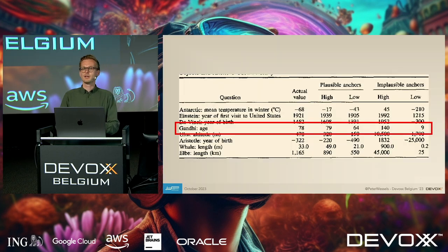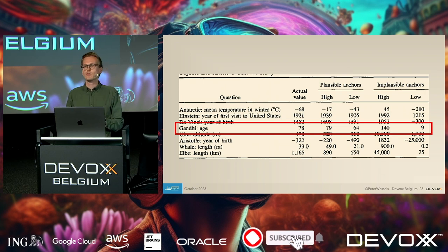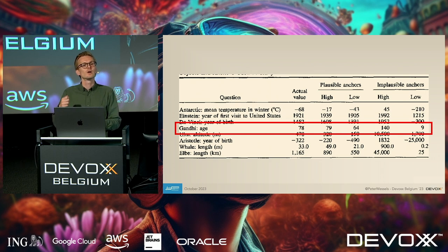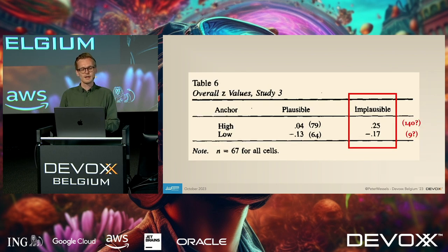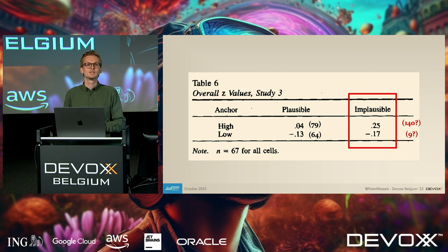You don't have to just take my word for it. This experiment was part of a larger study on the anchoring effect and how people are actually biased. They asked groups many questions — some with implausible anchors like ours, and a control group that received information more closely related to the real answer of 78 years old. They found significantly larger deviations from the real answer in the group with implausible anchors compared to the group with more relevant information.